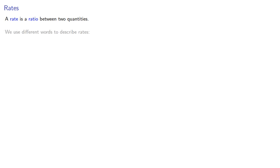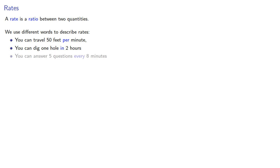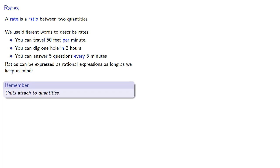A rate is a ratio between two quantities. We use different words to describe rates. You can travel 50 feet per minute, dig one hole in two hours, or answer five questions every eight minutes. Ratios can be expressed as rational expressions as long as we keep in mind the units attached to quantities.